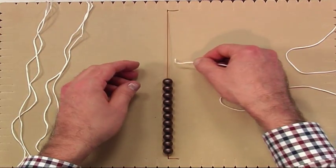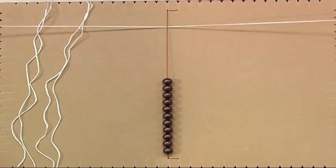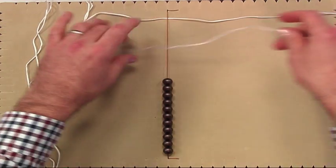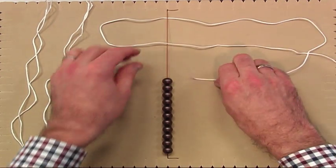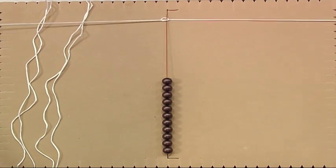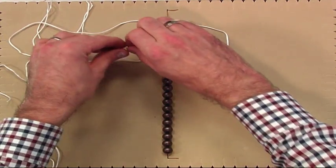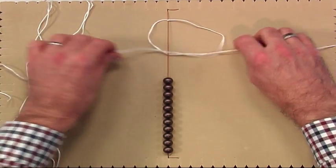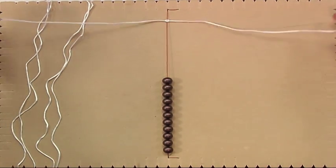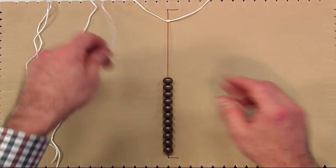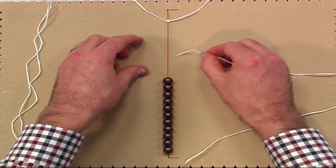So here we begin. We take one of our strands, we thread it underneath the lazy strand and we do a single square knot. So we do the left hand side first and then we do the right, like so. And then we just place that out of the way and we pick up our second piece of satin cord.